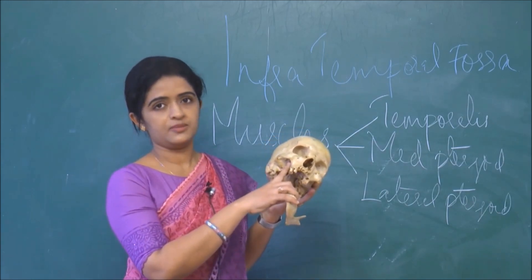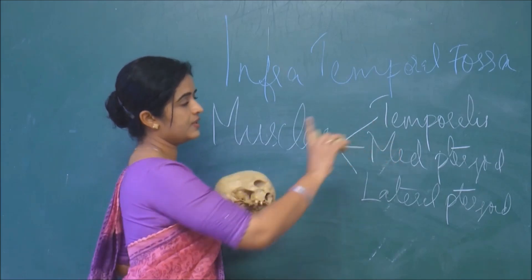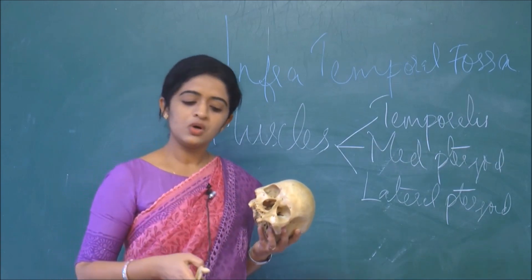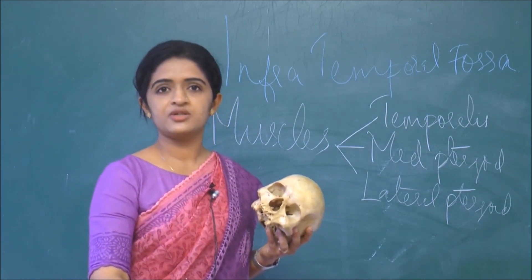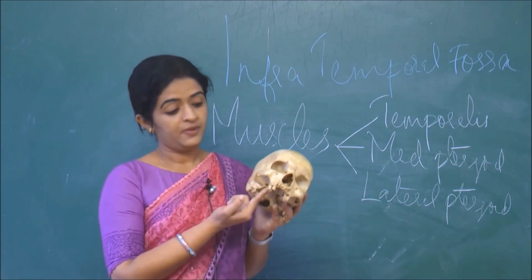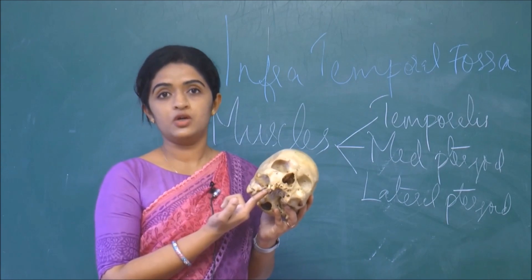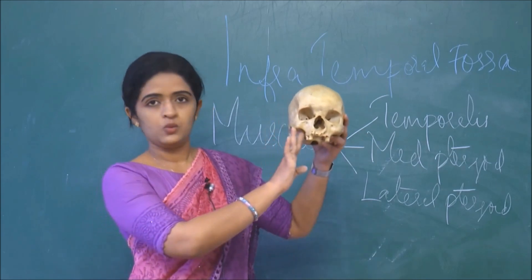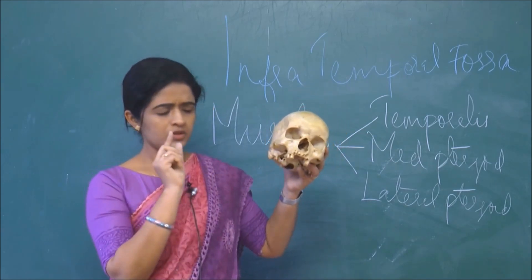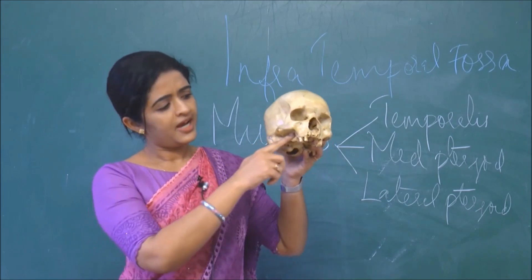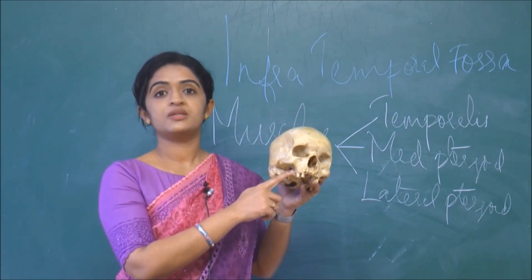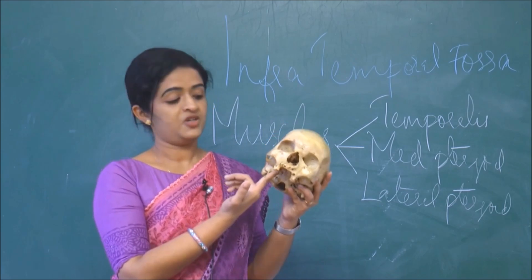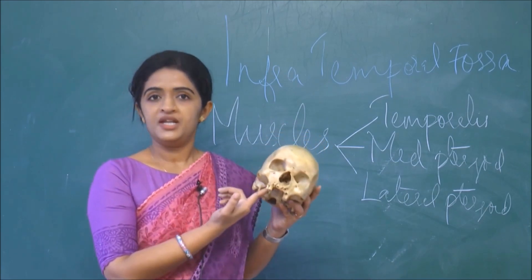So temporalis is seen in the infratemporal fossa. The next muscles are medial pterygoid and lateral pterygoid. Do you know how these muscles are named medial and lateral? They are named depending upon their origin from the lateral pterygoid plate. The lateral pterygoid plate forms the medial wall of the infratemporal fossa. The muscle arising from the lateral surface of the lateral pterygoid plate is called the lateral pterygoid muscle.